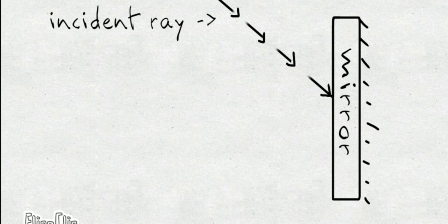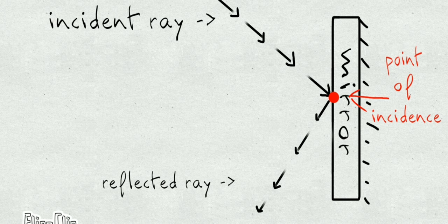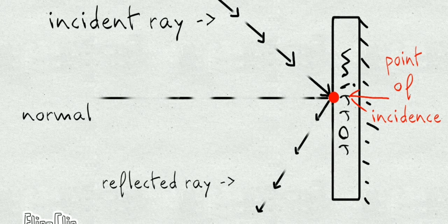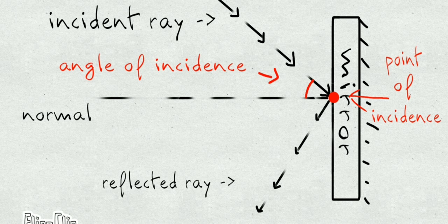The incident ray is the incoming ray — the ray that falls on the mirror. The point where the incident ray falls on the mirror is called the point of incidence. After reflection, the ray that returns — the ray going back — is called the reflected ray. The normal is an imaginary line perpendicular to the surface of the plane mirror at the point of incidence — it makes a 90-degree angle with the mirror surface. The angle between the incident ray and the normal is the angle of incidence, and the angle between the reflected ray and the normal is the angle of reflection.